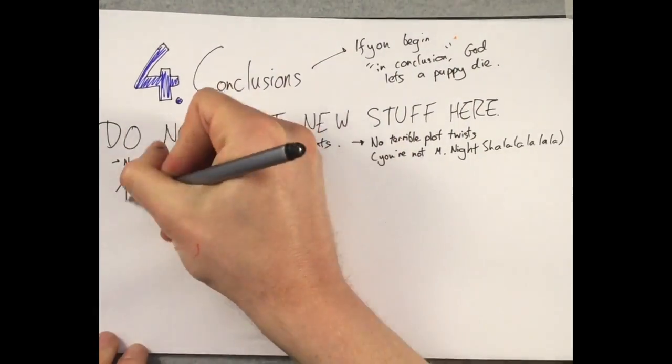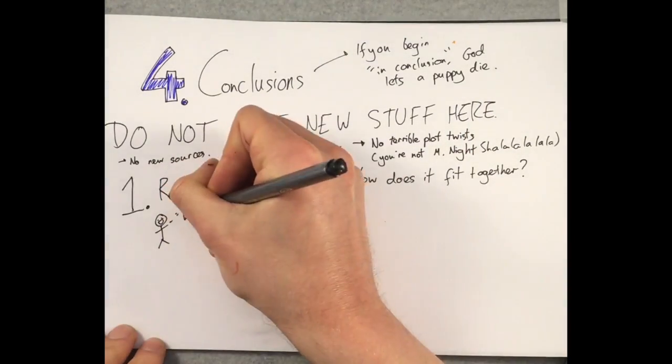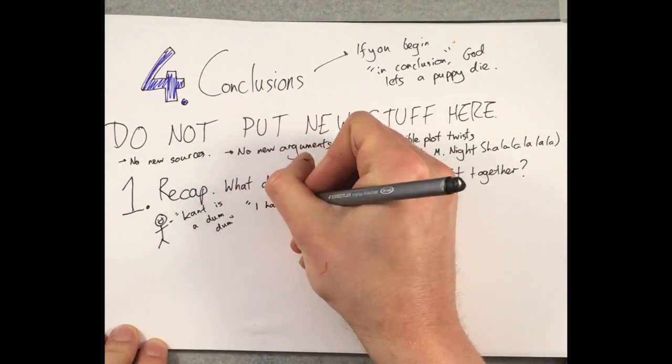What you should do is first, recapitulate your argument. Readers are stupid and have terrible memories. What did you prove in your essay? How did you prove it? This is like doing your introduction all over again, but with slightly nicer words.